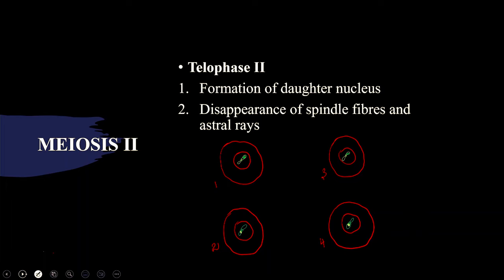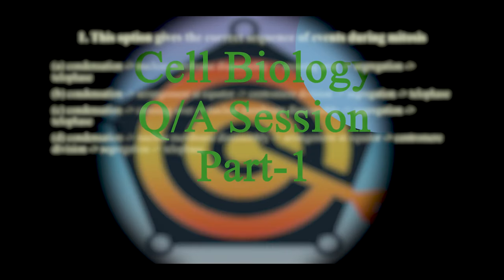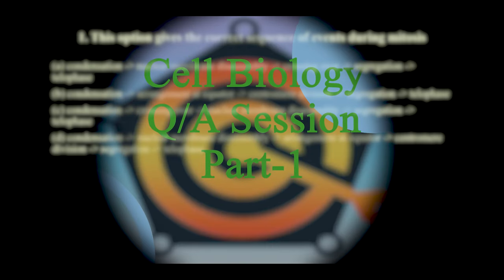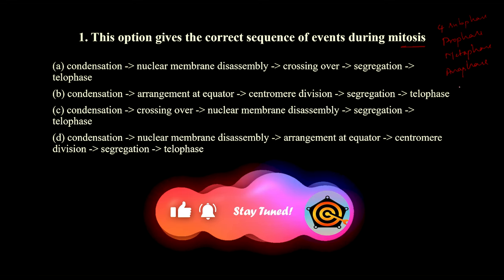There will also be cytokinesis in meiosis II, same as in meiosis I. This is all about meiosis I and II. Now let's discuss mitosis. In mitosis there are four sub-phases: prophase, metaphase, anaphase, and telophase.